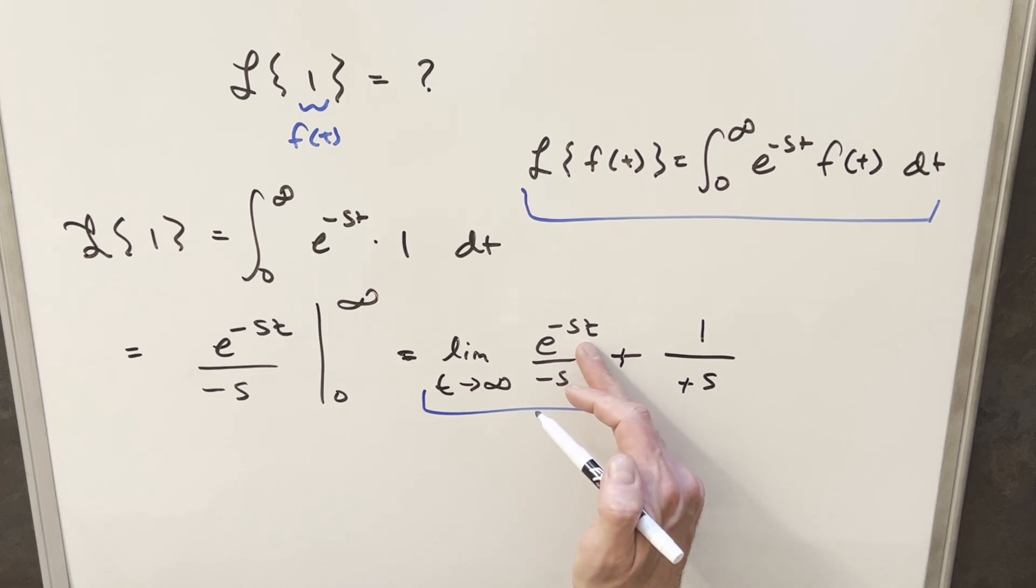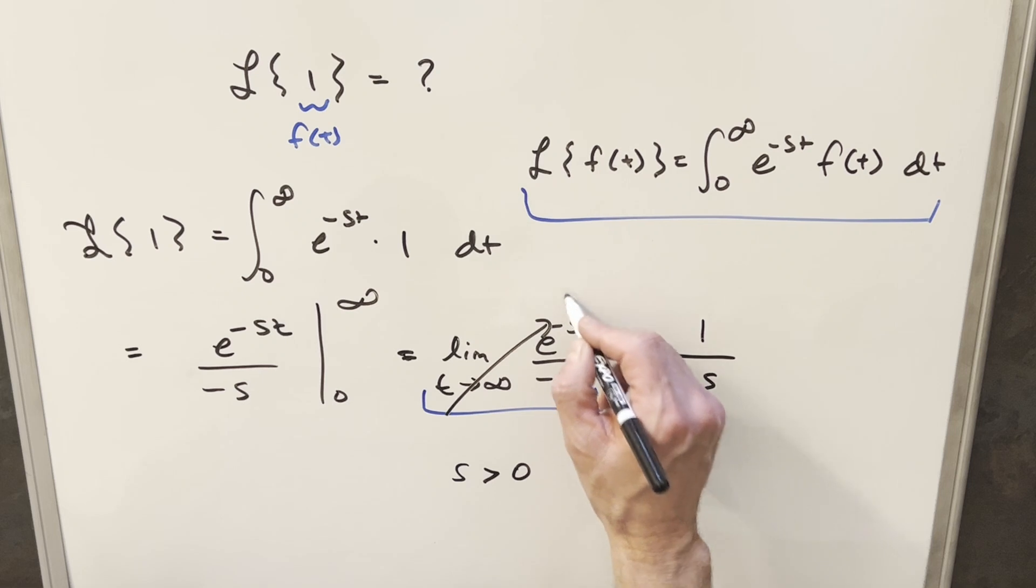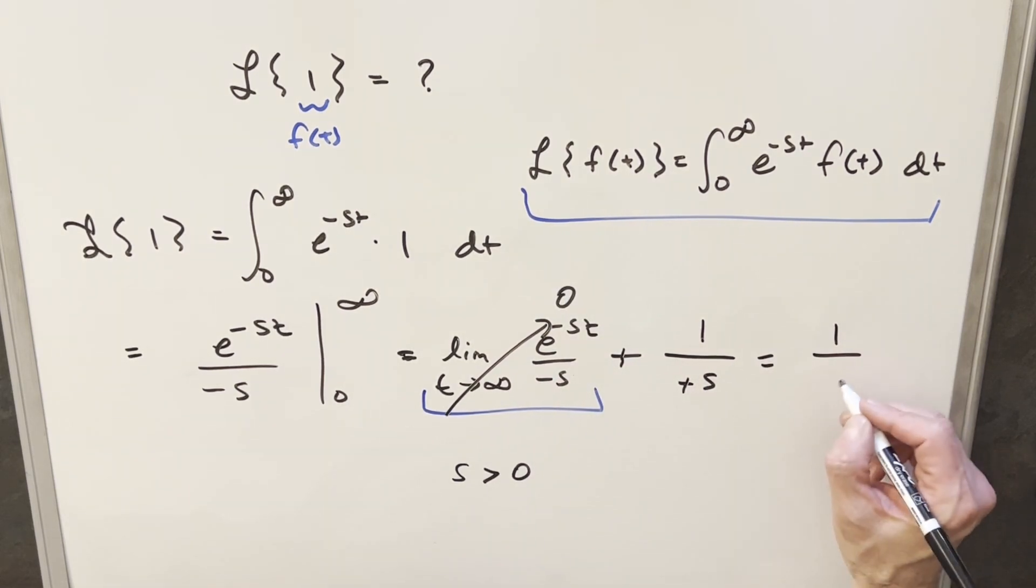So we actually need s to be greater than zero in order for this coefficient to be negative. So what we'll do is we'll set a condition on this. We'll say that we need s to be greater than zero in order to do this. But if we do that, this limit is always going off to zero. We don't have to worry about it. And then all we're left with is our solution of just one over s.